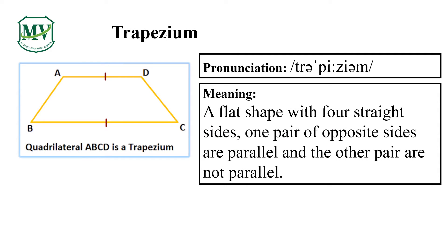Please say the word with me: trapezium. Can you read the meaning with me? A flat shape with four straight sides. One pair of opposite sides are parallel and the other pair are not parallel.